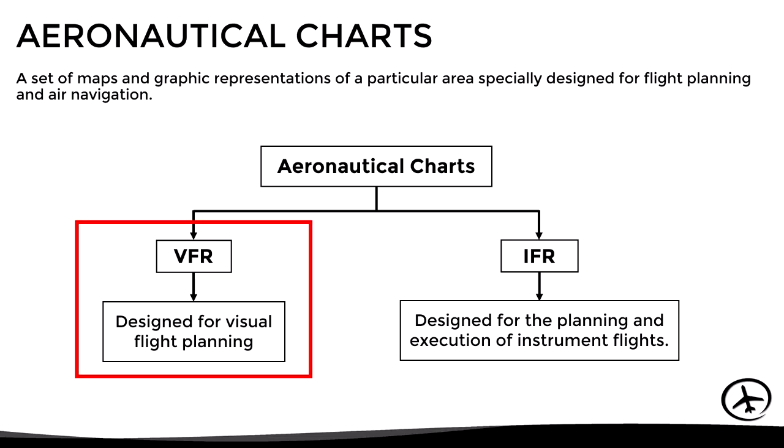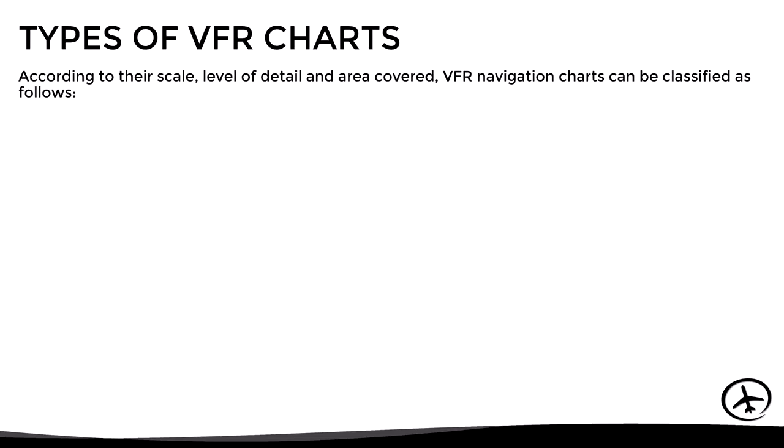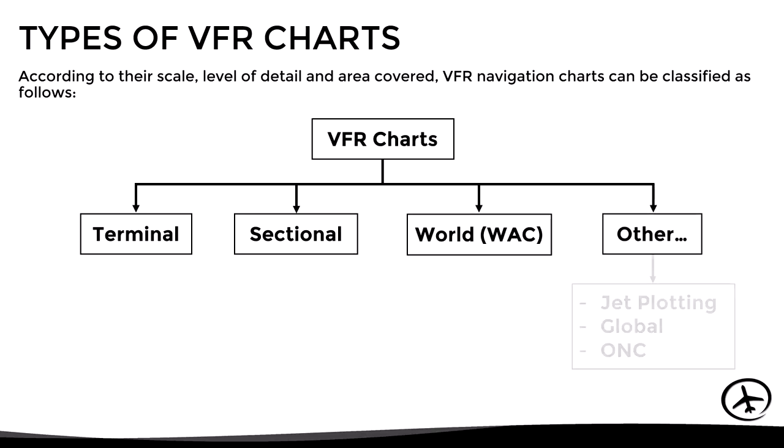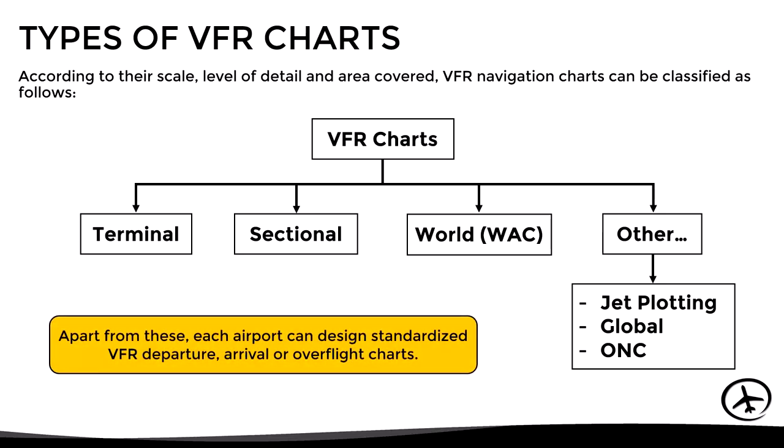Now, in this particular video, we will focus on the VFR charts only. So with this in mind, depending on their scale, level of detail, and area covered, VFR navigation charts can be classified as follows: terminal charts, sectional charts, world aeronautical charts, and some less common ones such as the jet, plotting, global, and operational navigation charts. All of these charts are used for route planning over a relatively large area. However, apart from these, each airport can design their own VFR departure, arrival, or overflight charts.